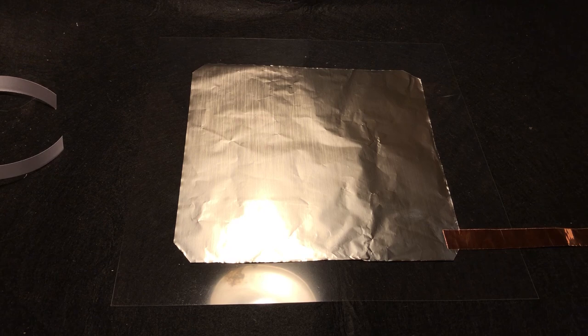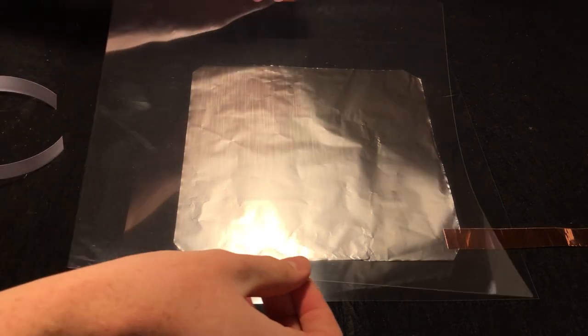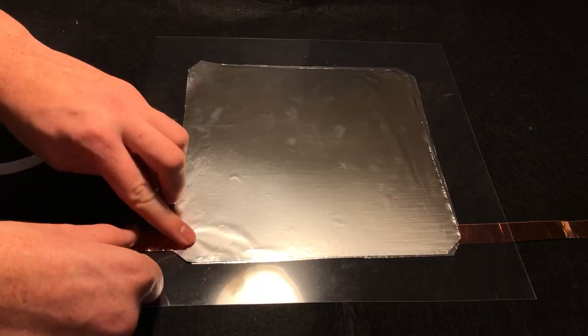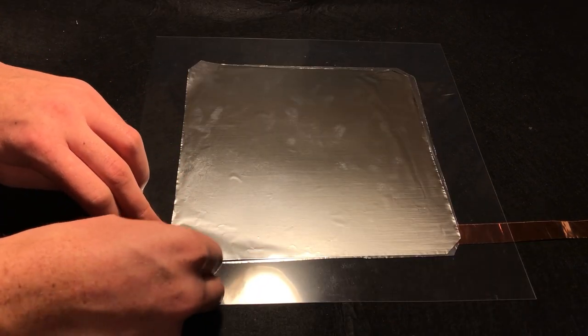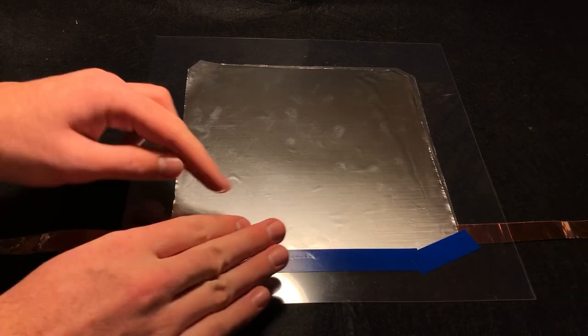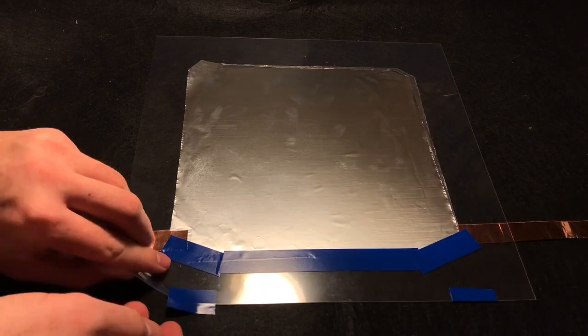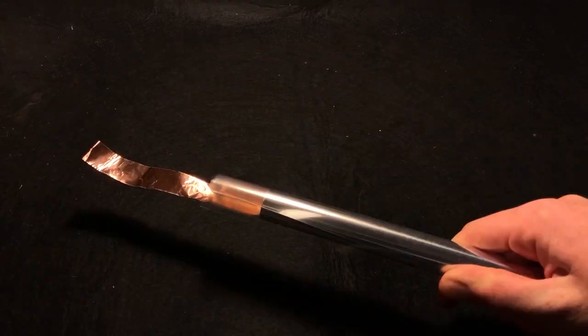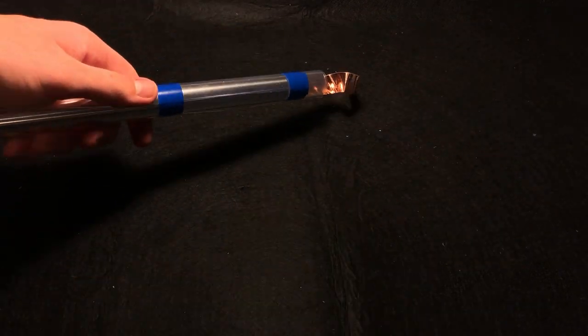With one half of the capacitor done, we repeat the process for the other plate. First placing another sheet of mylar, then the next foil sheet, and finally attaching the second copper leg. Now all that's left to do is tape some of the foil down and tightly roll it all up. Rolling the capacitor doubles the plate surface area and in turn the capacitance. It also allows for a much better compression of the layering than when laid flat.